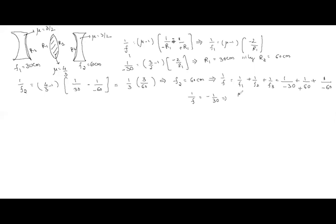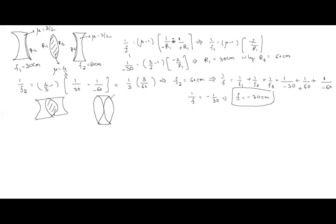For the water lens: 1/f2 = (μ_liquid - 1)(1/R1 - 1/R2). After substituting and solving, 1/f = 1/f1 + 1/f2 + 1/f3 gives the combined focal length f = -30 centimeters.